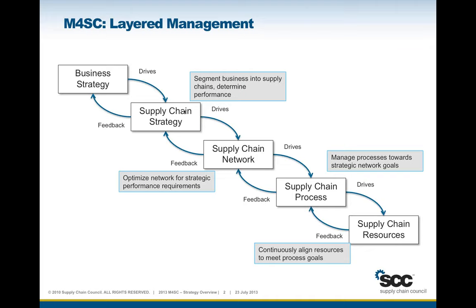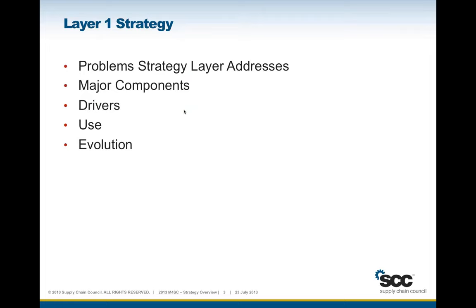I'm going to talk now mostly about the supply chain strategy layer and focus on its inputs and outputs, the kind of problems it addresses, the major components of the function of managing strategy in the company. I'll talk about the drivers — what causes strategy to be altered and articulated — how we see the components of the strategy layer used by organizations which adopt M4SC, and the future evolution of this and what we'd like to see coming out of research teams around strategy.